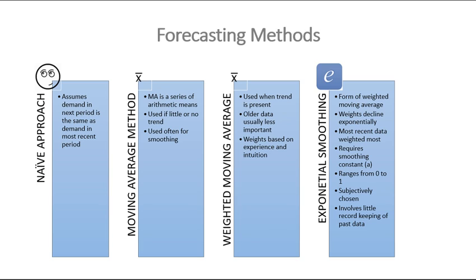There are several forecasting methods. First is the naive approach, which doesn't involve calculation — you simply assume that because you sold 500 units yesterday, you'll sell approximately 500 today. Retailers with small shops often use this approach based on experience and observation.